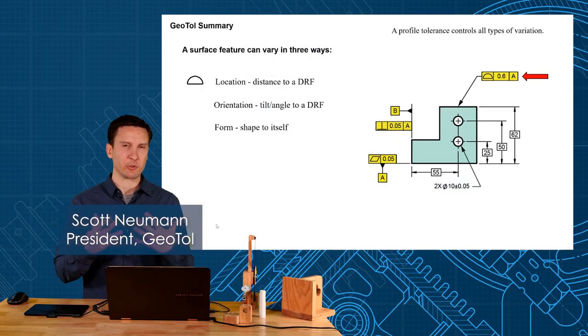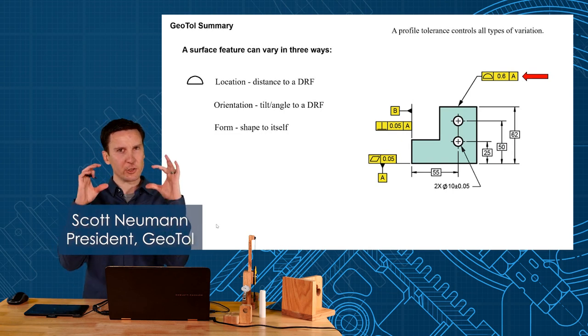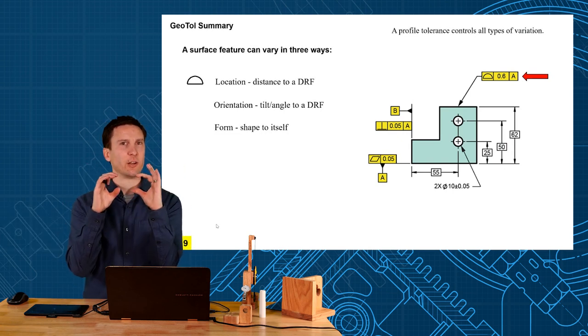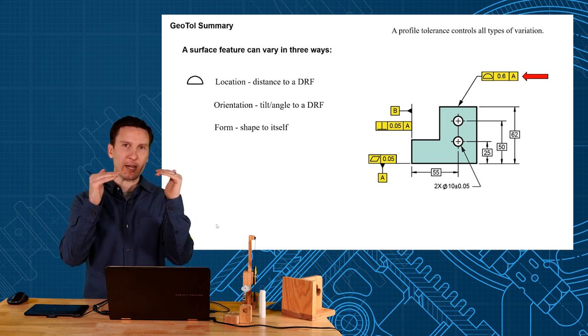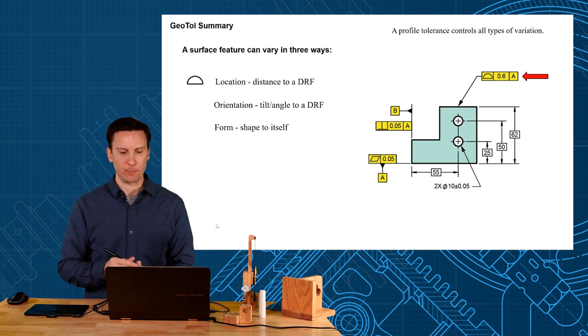So I want to try and summarize geometric tolerancing with how location, orientation, and form creates a hierarchy. You start with location then you can refine as you go down.